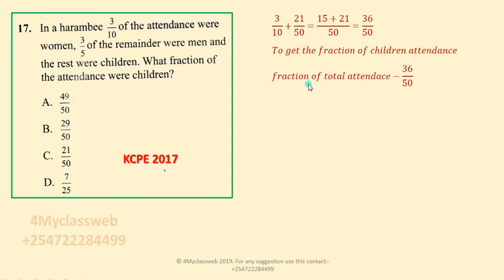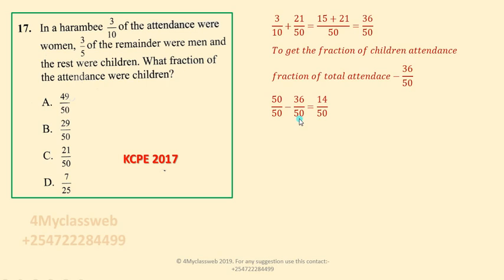To get the fraction of children who attended, we take the fraction for the total attendance — that is, all people in the harambee including men, women, and children — and subtract the total for women and men. The denominator is 50, so we use 50 out of 50 to represent 1. The LCM remains 50, so you take 50 minus 36 to get 14 out of 50.